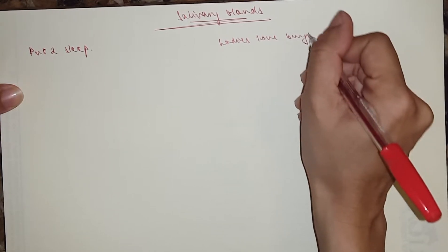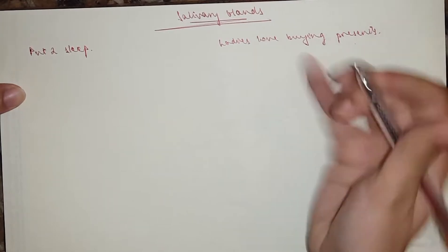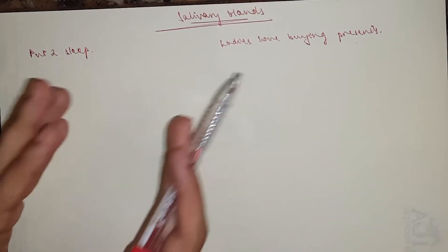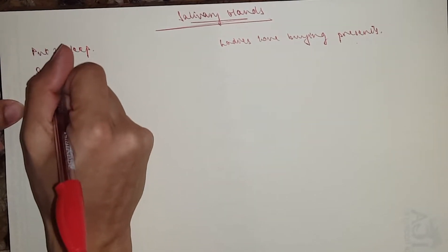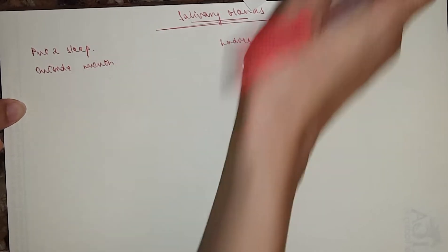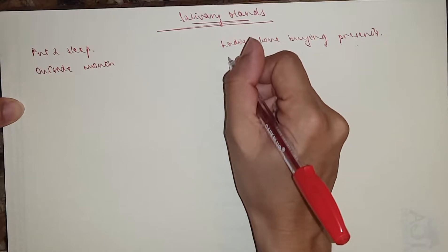So 'put to sleep,' we'll start with the major ones. They are situated outside the mouth, okay, outside the mouth, and then the minor ones would be inside the mouth, of course.